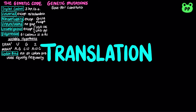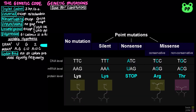There are three types of base pair substitutions. Missense mutation results in the translation of a different amino acid. Silent mutation results in the translation of the same amino acid. And nonsense mutation introduces a premature stop codon.